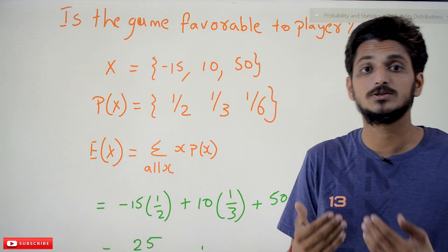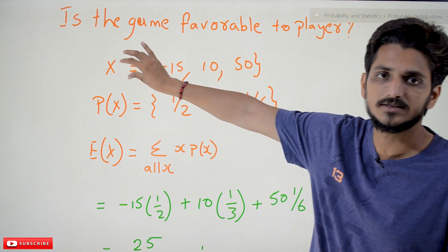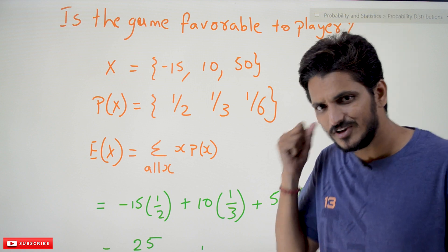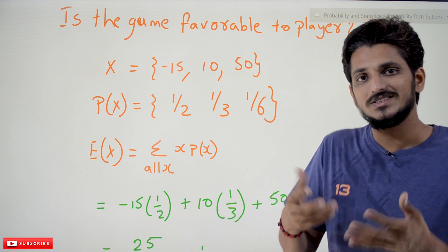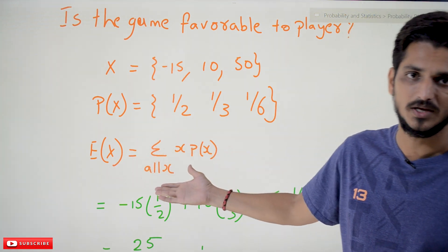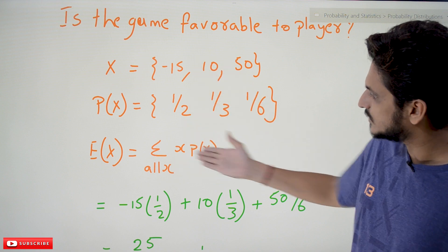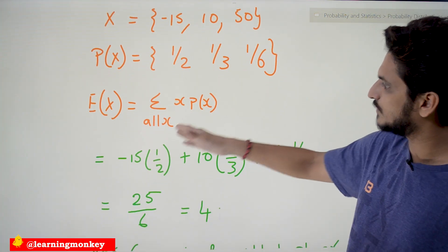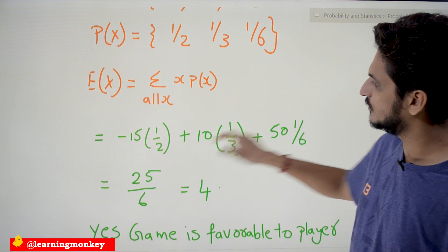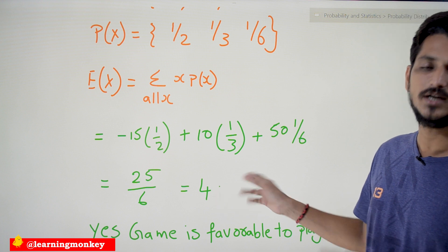If we find the expected value for random variable X — meaning if the player plays the game again and again, what is the amount he is going to get on average — that is what the expected value represents. Substituting these values into E(X) = summation of X times P(X), the amount he is expected to get is approximately 4-point-something.